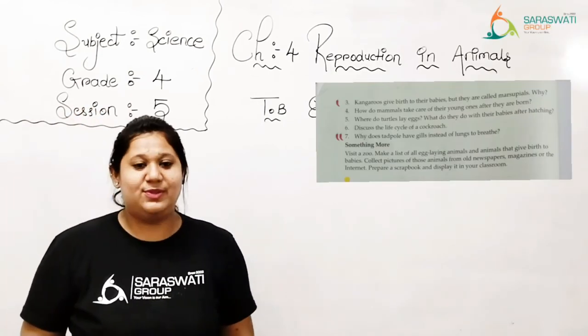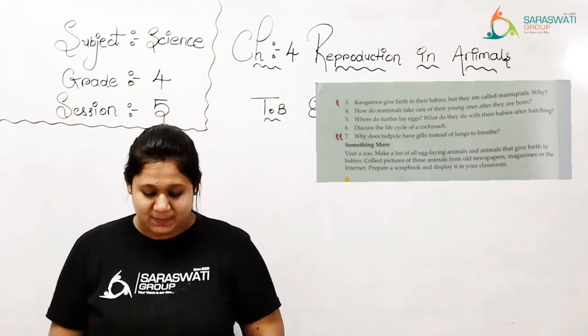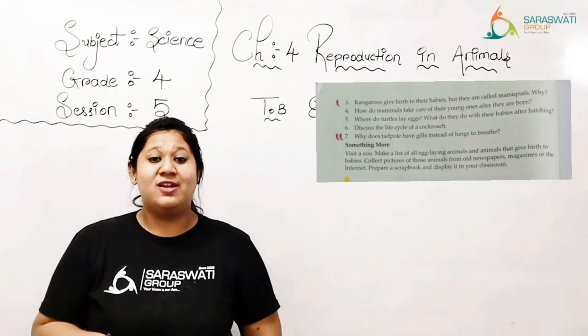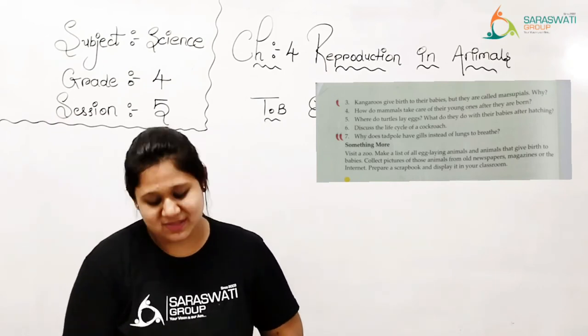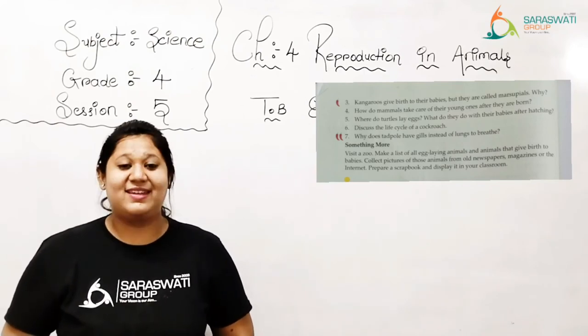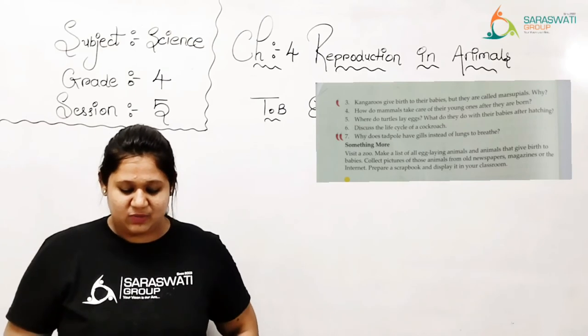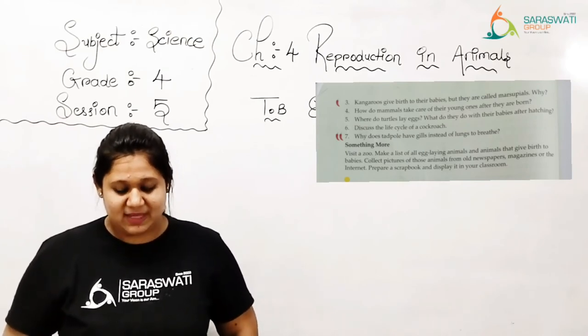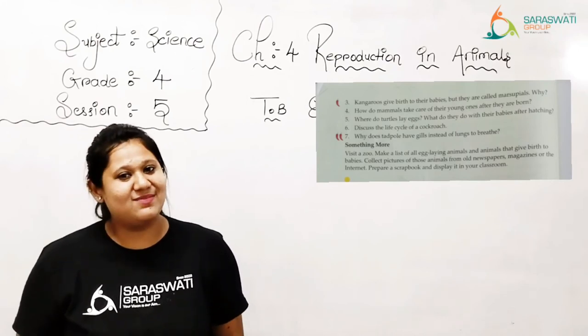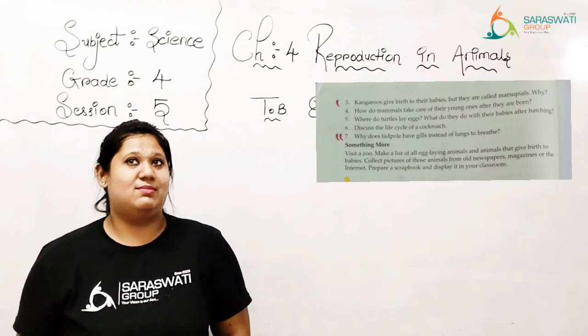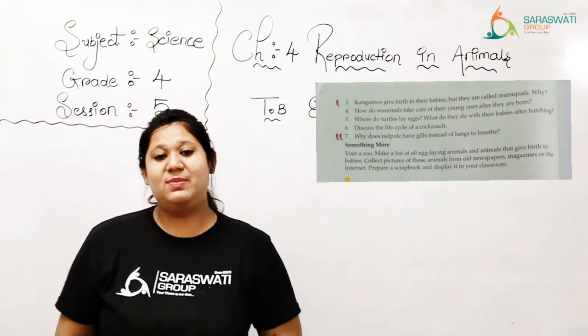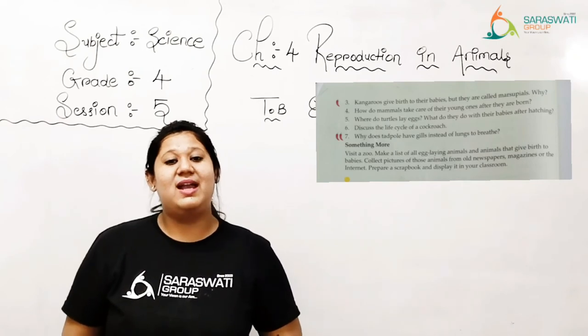Now number 3: kangaroos give birth to their babies but they are called marsupials. Why? Because they carry their own babies in a pouch. That's why they are called marsupials, right? Kangaroos are called marsupials because they have a pouch on their body to carry their young ones. So easy. The mother kangaroo cares for them, feeds them and protects them and carries them everywhere in her pouch till they can look after themselves. Till they mature, she helps to carry them and takes care of them. Clear?